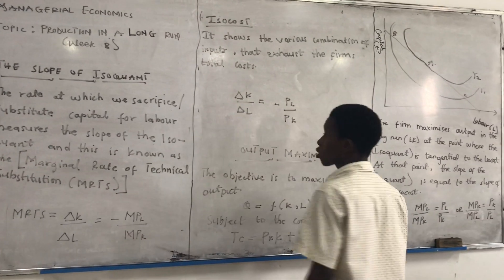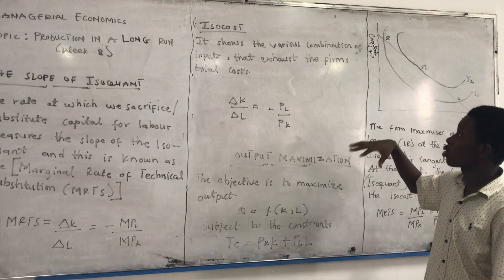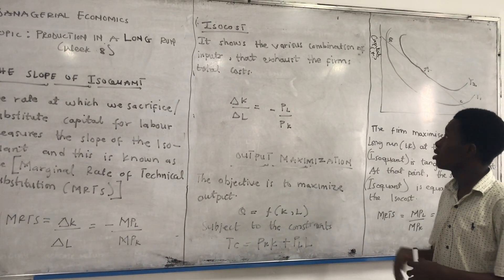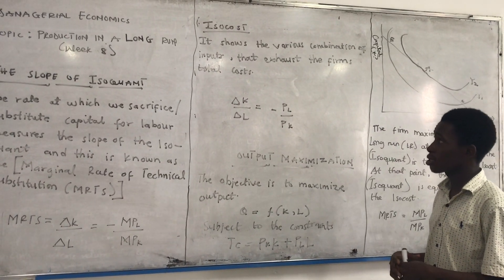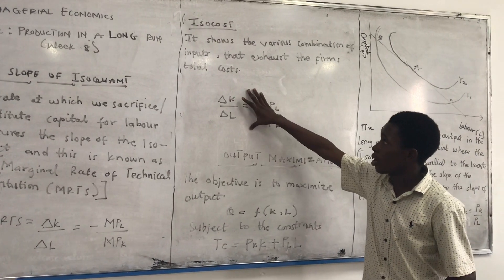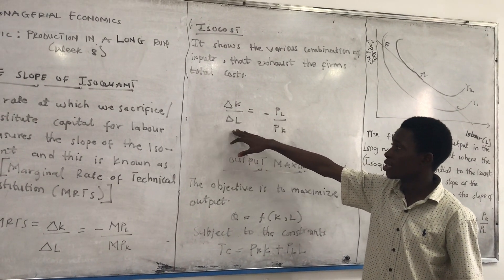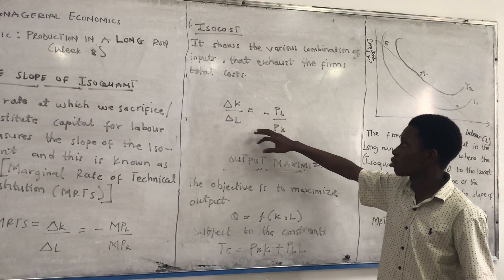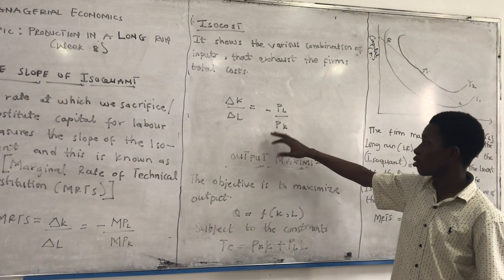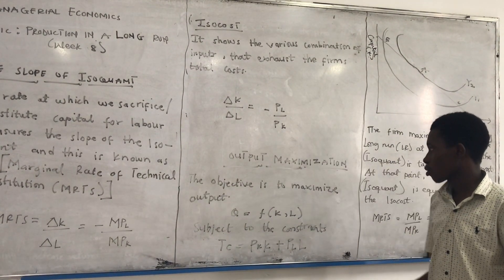We also have the isocost. With the isocost, it shows the various combinations of inputs that exhaust the total cost. The formula for the slope of the isocost is: change in K over change in L = negative price of labor over price of capital.